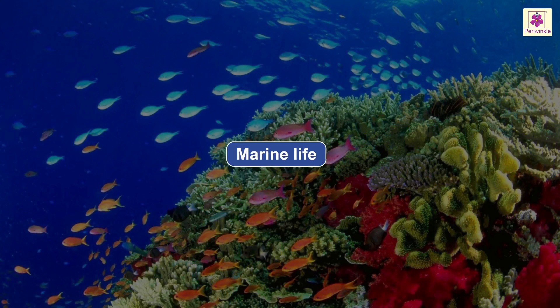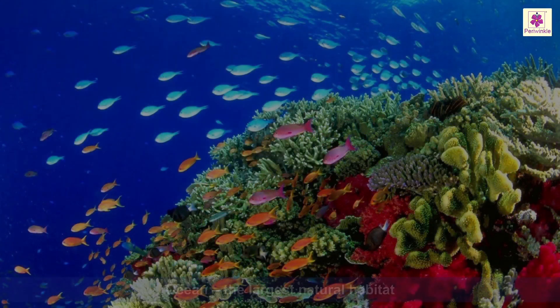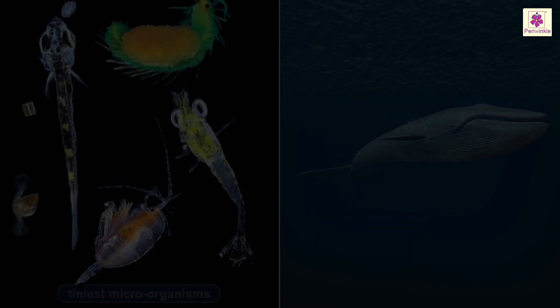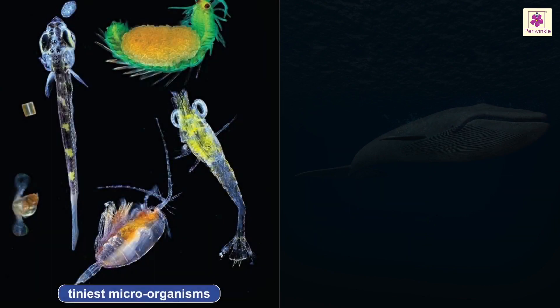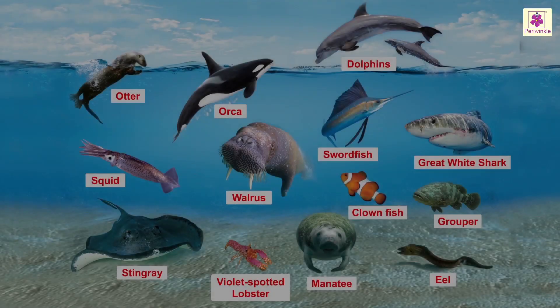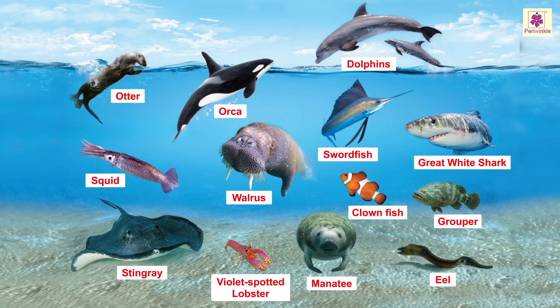The oceans are the largest natural habitat on our planet. A huge variety of creatures live there, from the tiniest microorganisms that can only be seen under a microscope, to the largest creature on Earth — the blue whale. These are some of the Earth's most unusual creatures living in the waters of our oceans.